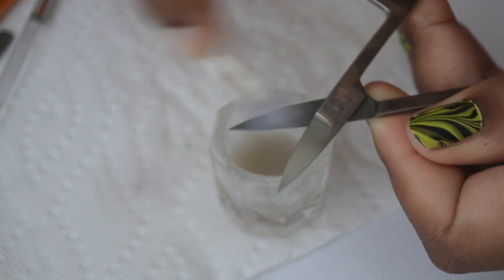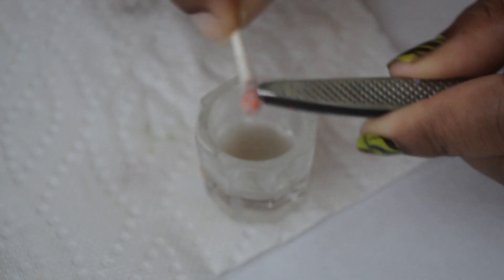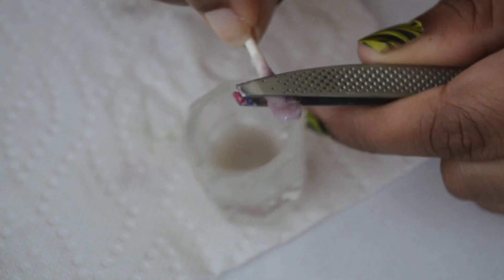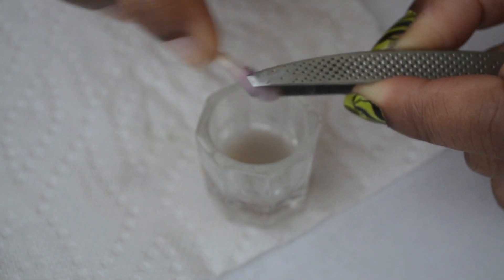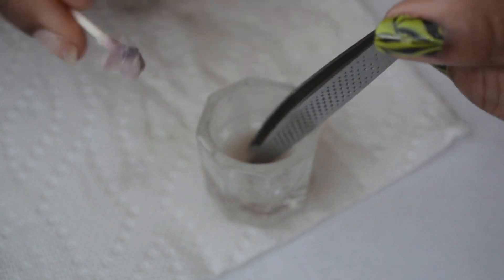I let it sit in the nail polish remover until it has loosened up a bit. Then I continuously wipe until all the polish is gone.